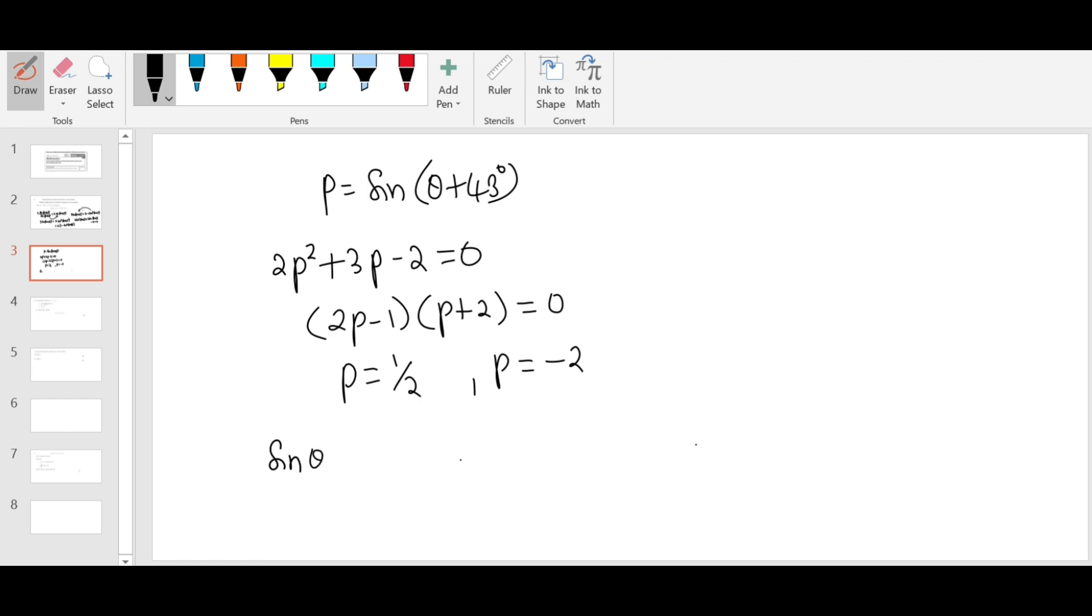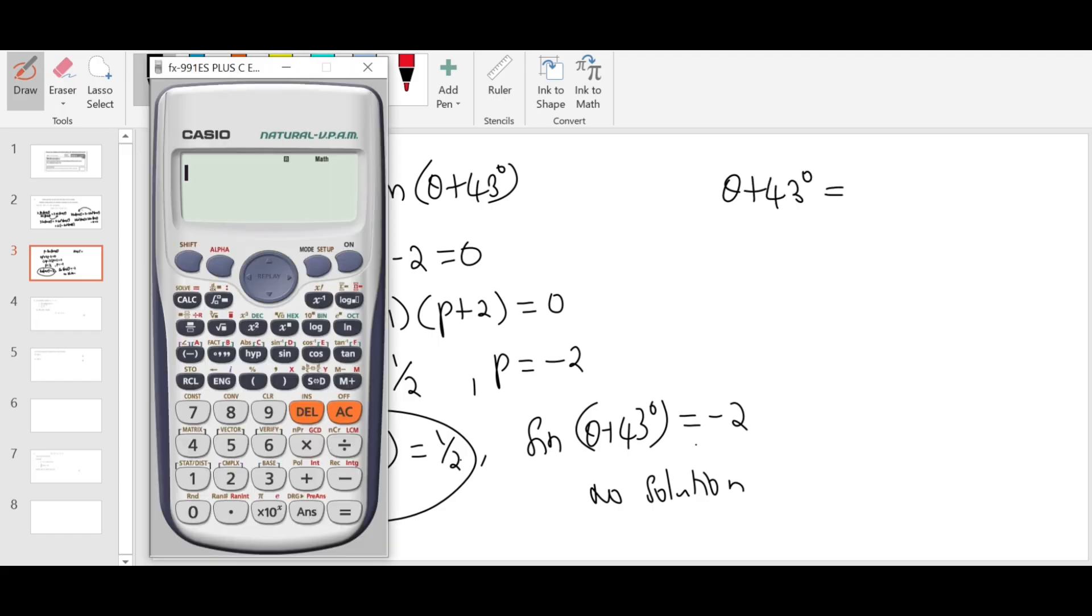Now replace P back to sine theta plus 43 degrees equals half, and sine theta plus 43 degrees equals minus 2. The range of sine is minus 1 to 1, so this one has no solution. We just need to solve this one. How do we solve it? Find the principal value. Theta plus 43 degrees equals sine inverse of half. Sine inverse of half in degrees is 30 degrees. That's the principal value.